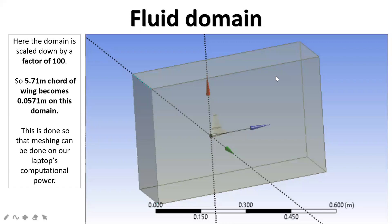Now comes the main part: the fluid domain. To solve the simulation we placed the total model inside a domain, and this domain is scaled down by a factor of 100. This means the chord length of 5.71 meters on the real wing becomes 0.057 meters in the domain, so that meshing can be done on our laptops within their computational power.